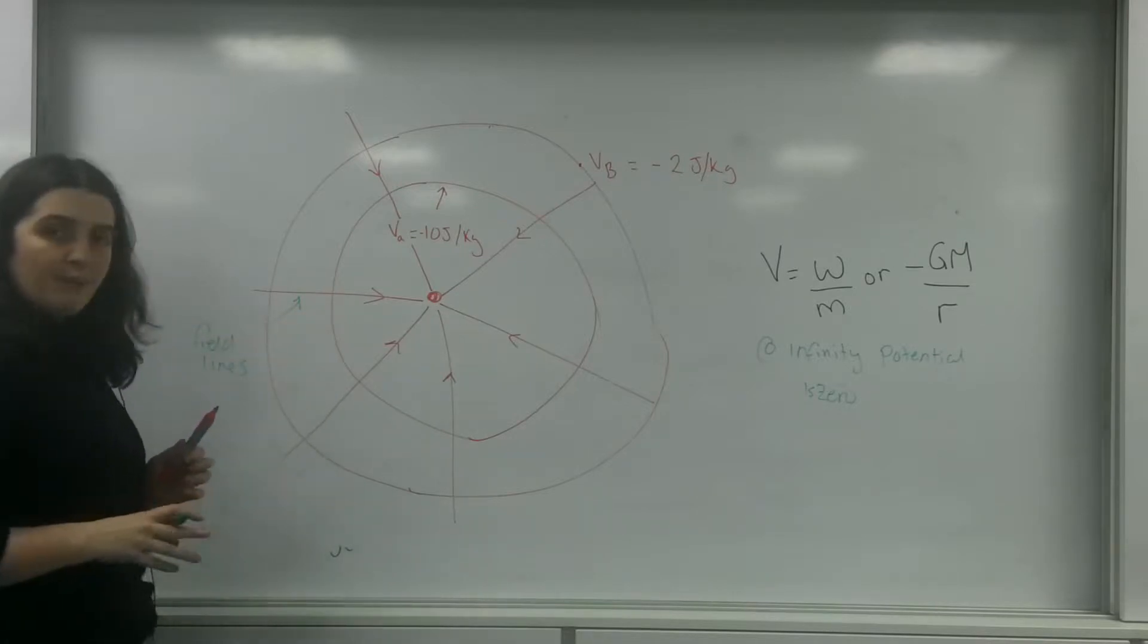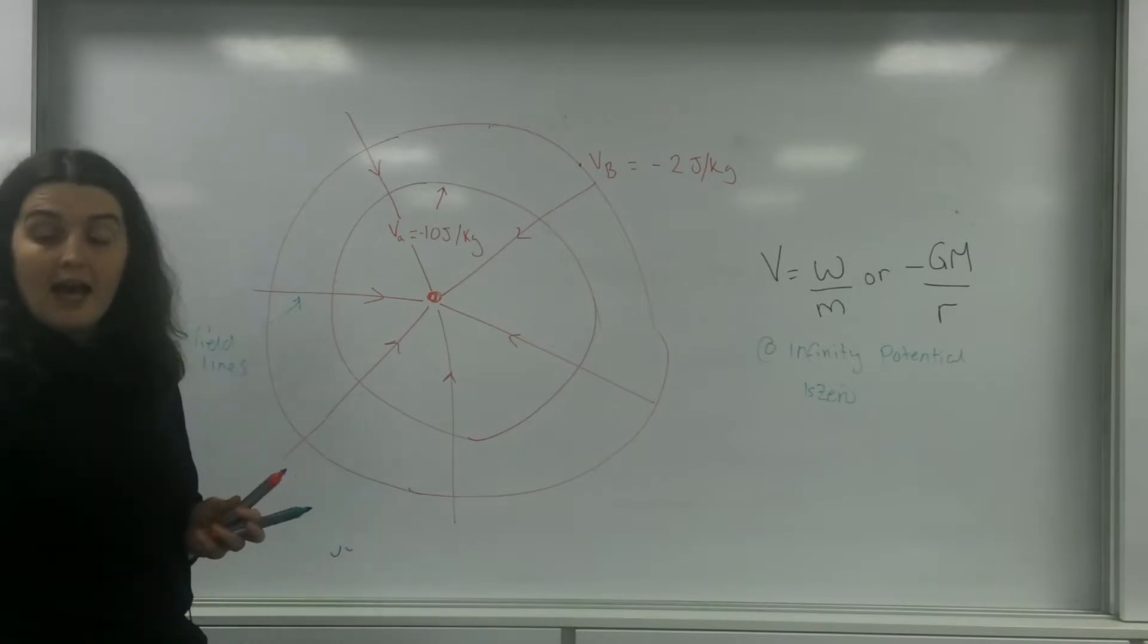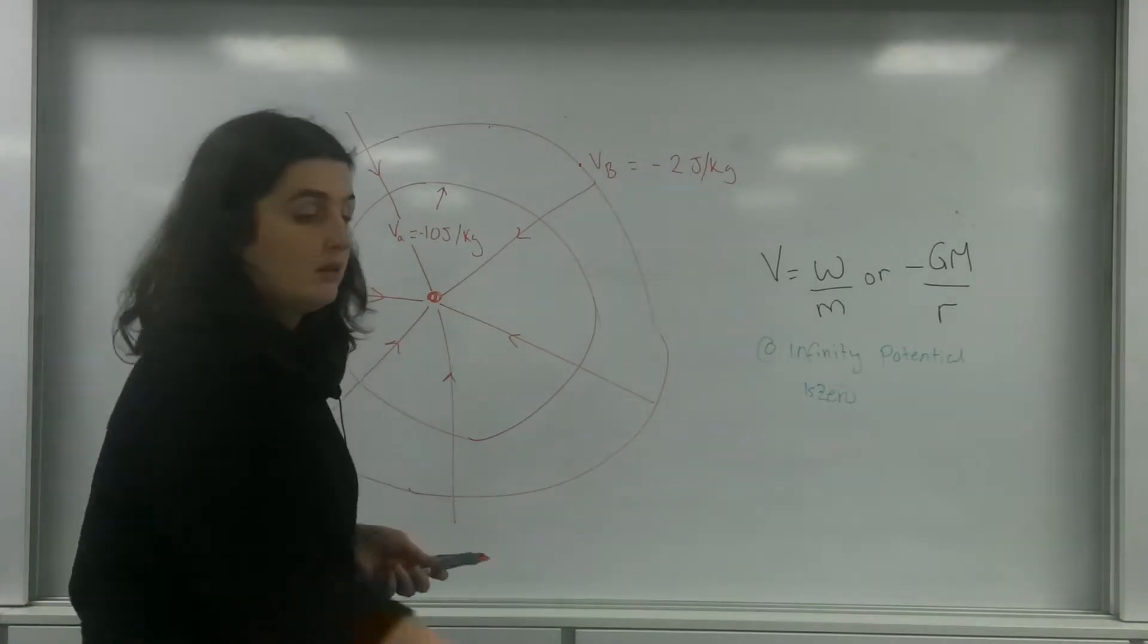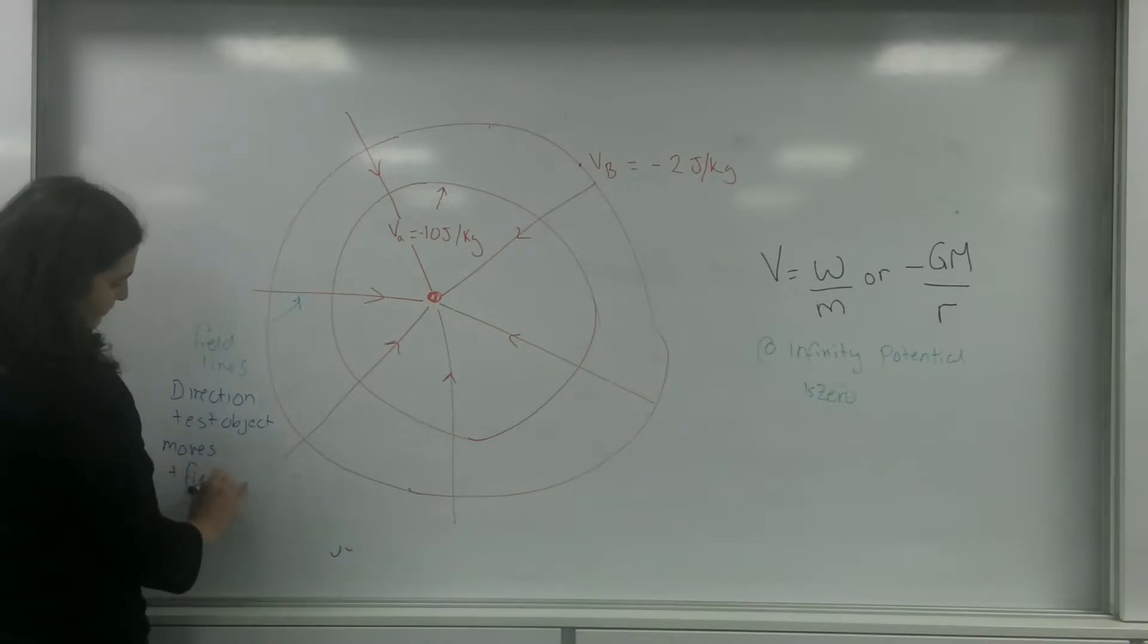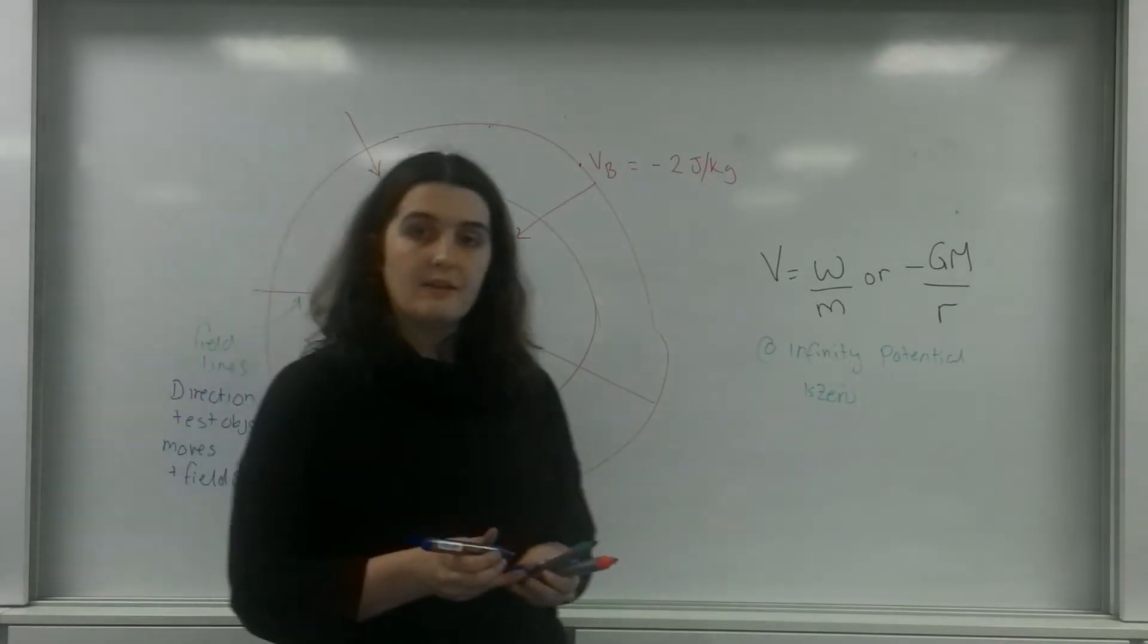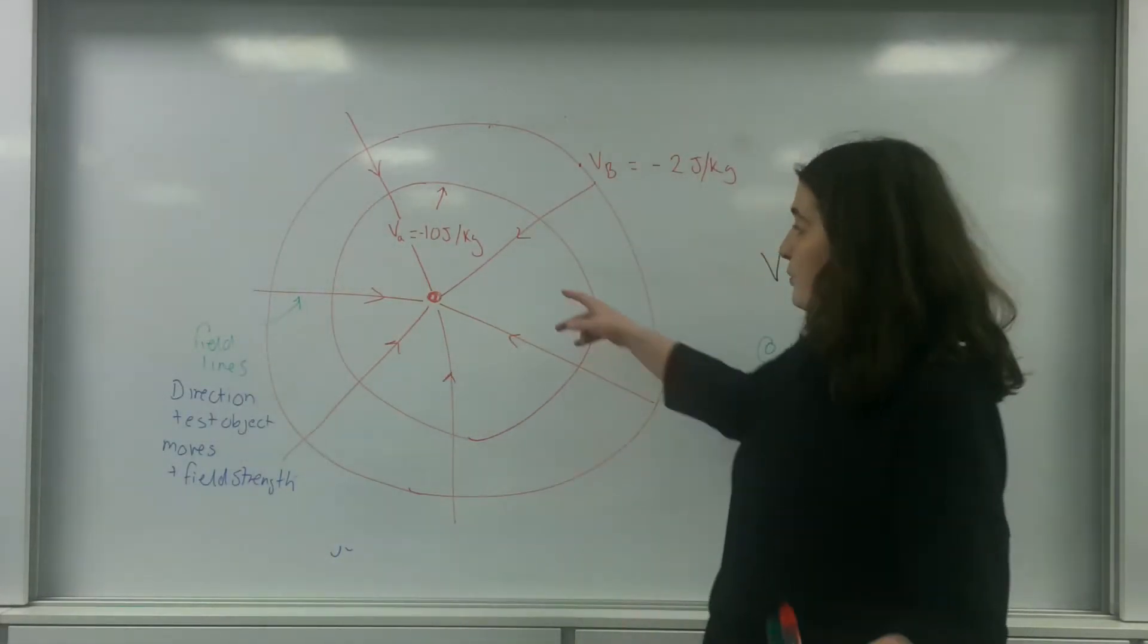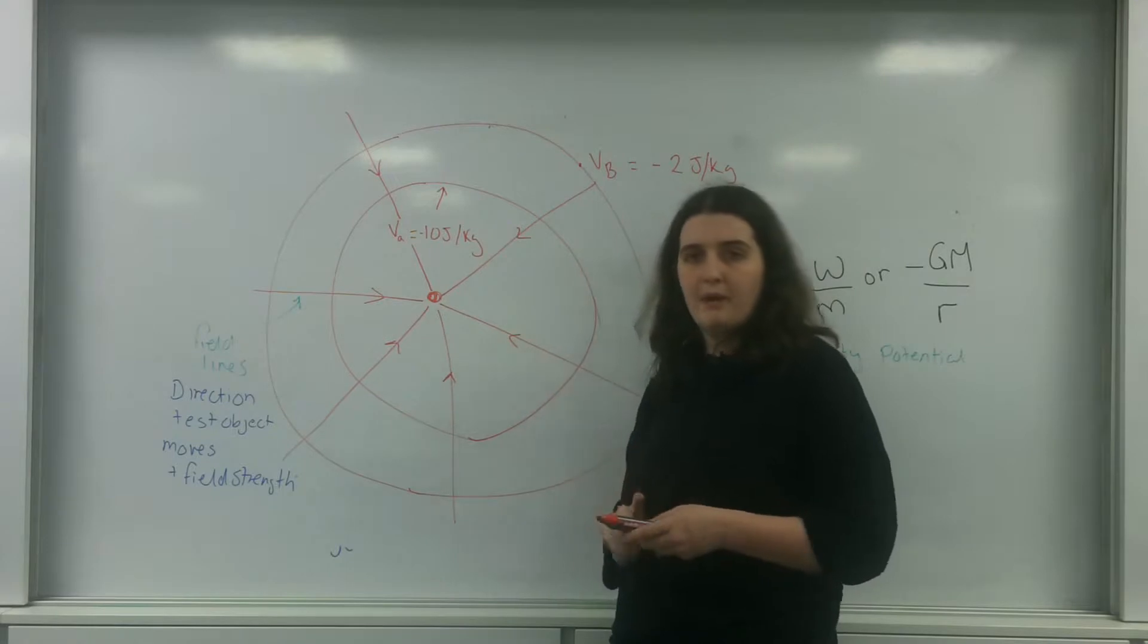And they represent the strength and the direction the object will be moved into. So these represent the direction a test object moves and field strength. Because the closer they are together, the stronger the field, so the field is much stronger near the center of the mass.